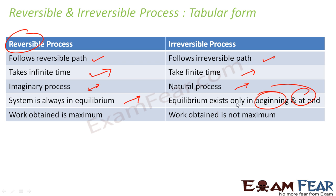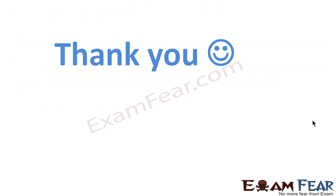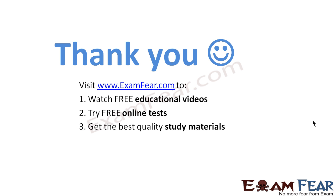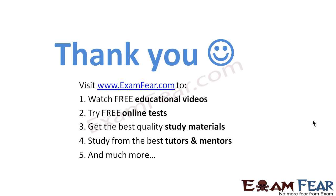During the whole irreversible process, the system is not in equilibrium with the surroundings. In a reversible process, the work done is maximum; in an irreversible process, the work done is not maximum. Thank you — visit examfear.com to watch free educational videos, take free online tests, get the best quality study materials, and study from the best tutors and mentors.